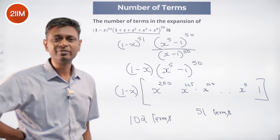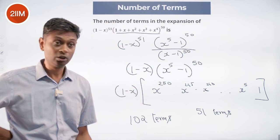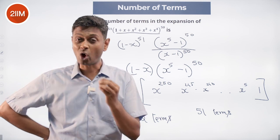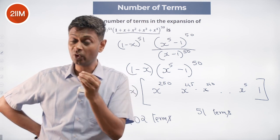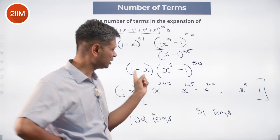This expansion we know will have 51 terms. This has two terms. 2 into 51 is 102. It's not always like that because a bunch of terms can have the same coefficient. Just this idea is important.